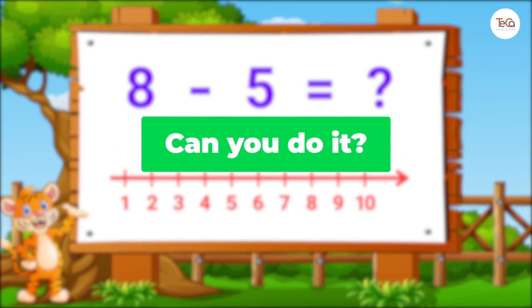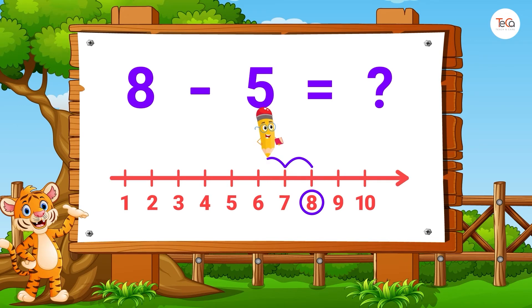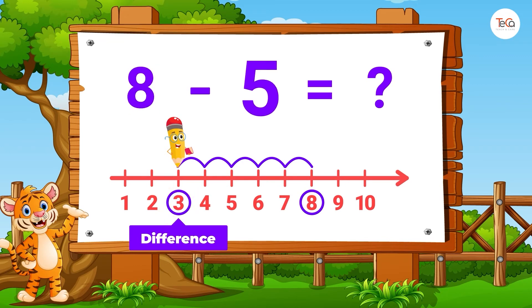Can you do it? We start from number 8. Then jump 5 numbers to the left. Then see the number where we stop to find the difference. Here we stop at number 3. So, 8 minus 5 equals 3.